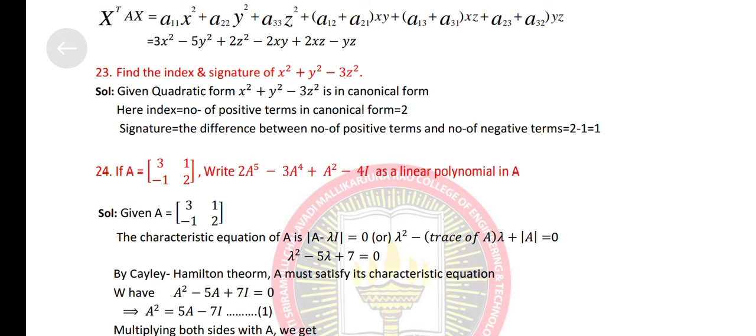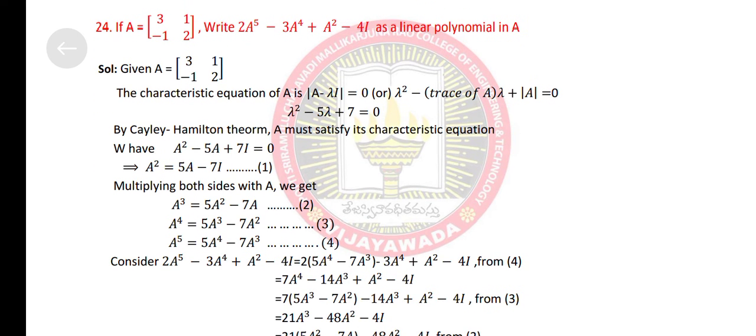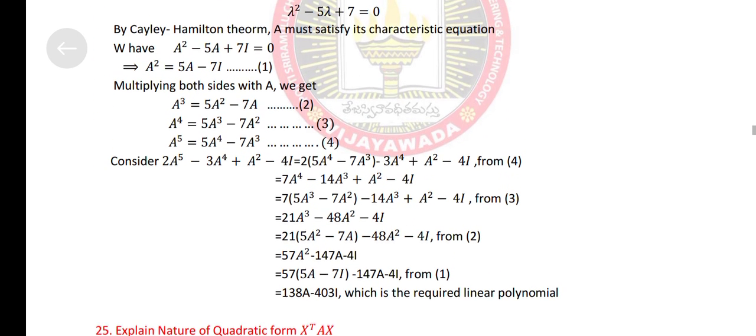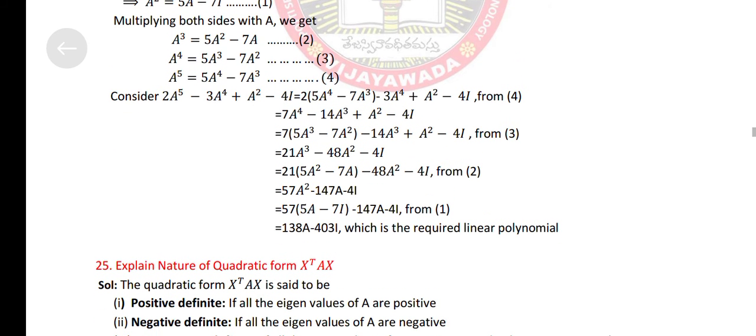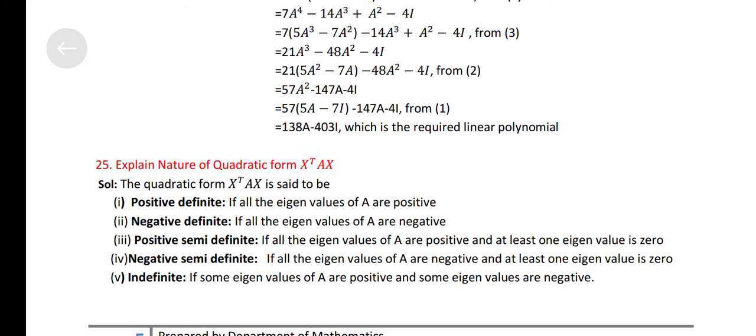If A is equal to square bracket 3, 1, minus 1, 2, write 2A to the power of 5 minus 3A to the power of 4 plus A square minus 4I as linear polynomial in A. Explain the nature of quadratic form x transpose Ax.